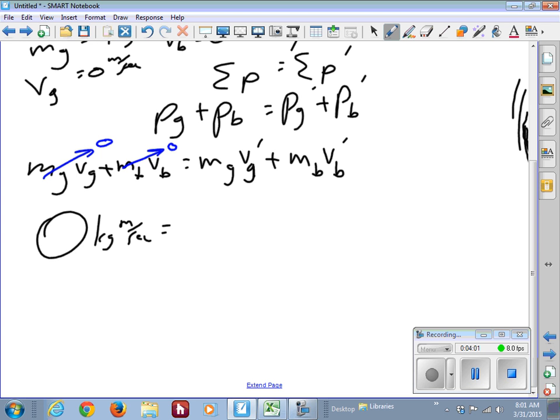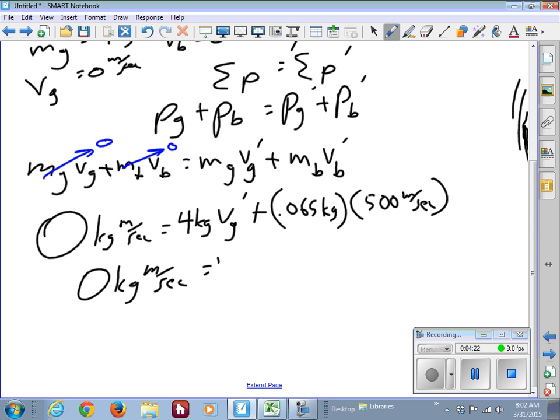That has to be equal to the mass of the gun, which is four kilograms times vg prime. That's what we're trying to solve for. Plus 0.065 kilograms times the 500 meters per second. That's going to give you zero kilogram meters per second. That will be equal to still the four kilograms vg prime plus this works out to be 32.5 kilogram meters per second.